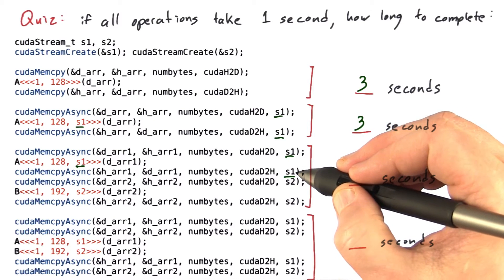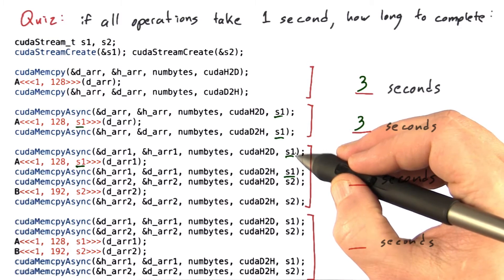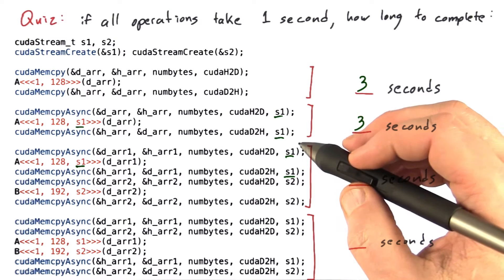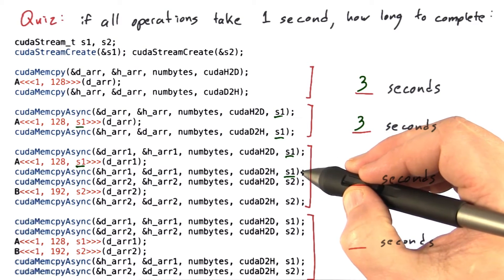And it proceeds to the next statement, which is another cudaMemcpyAsync to copy the results of kernel A back onto the host. All three of these are in stream 1, so they will all wait for each other on the GPU, but the host just issues a command, issues a command, issues a command. It doesn't stop.